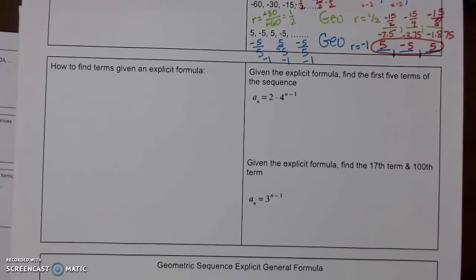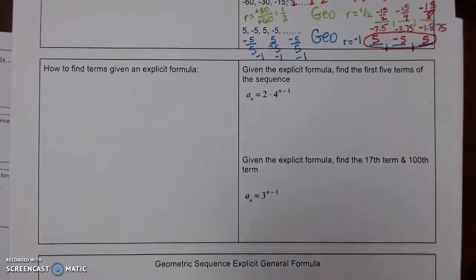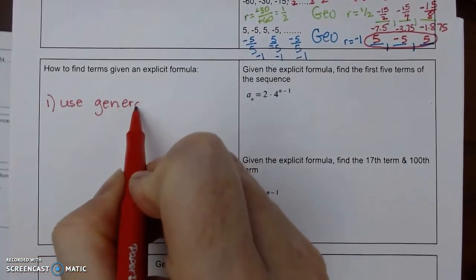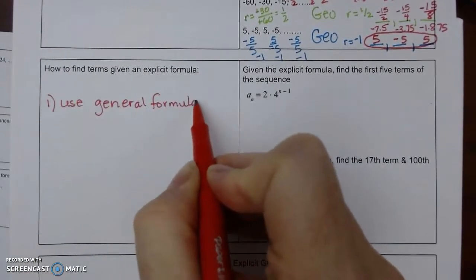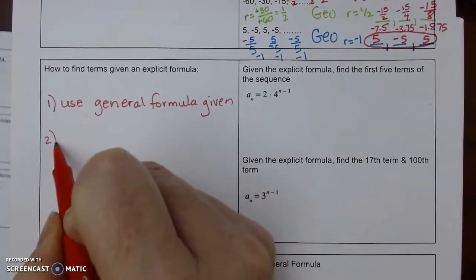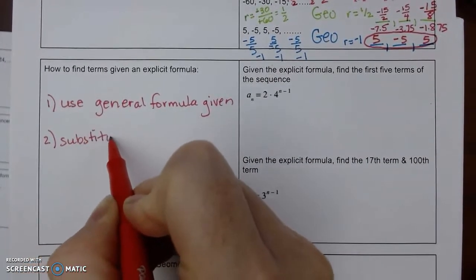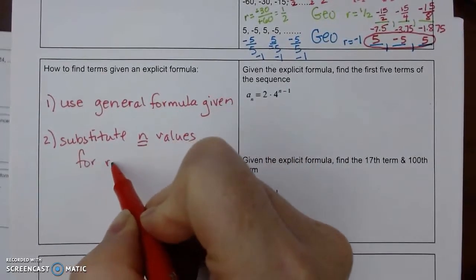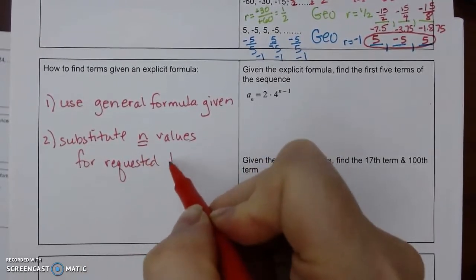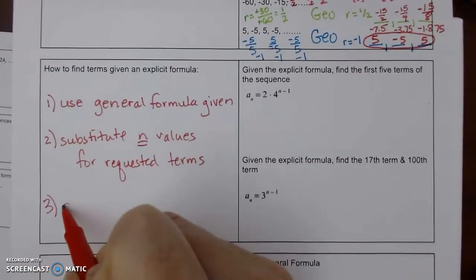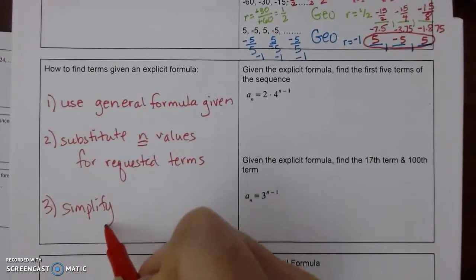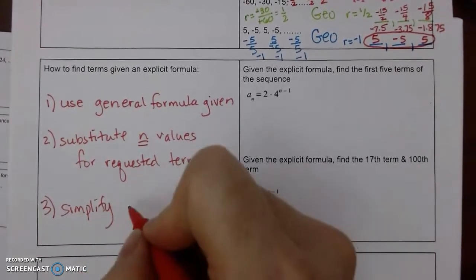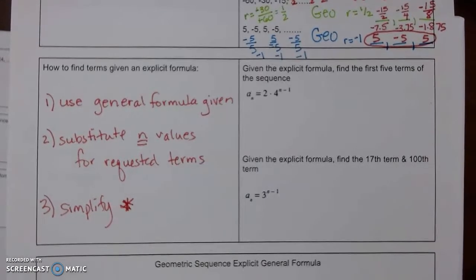So, how to find terms given the explicit formula? It's the same way that we did arithmetic. Number 1 is you're going to use the general formula given. We are going to substitute the terms that they want for requested terms. And then 3, we're going to simplify. Now, if some of the numbers are really large, your calculator won't actually give you the exact answer. So you can leave those answers in exponential form.